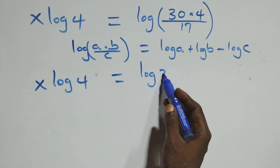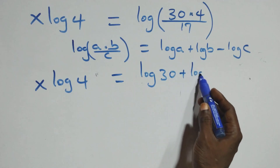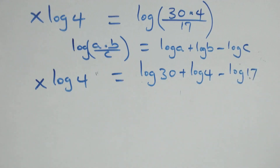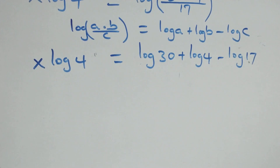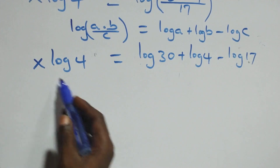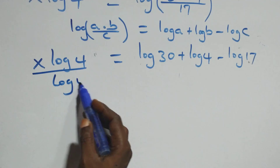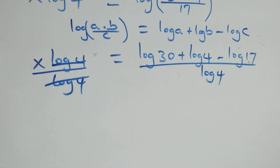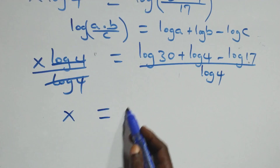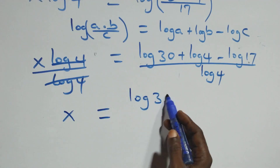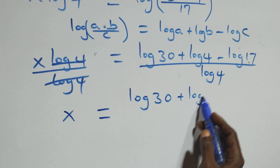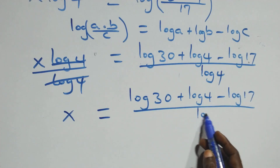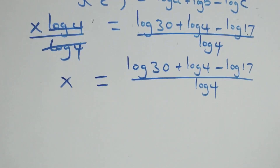So this becomes x·log 4 equals log 30 + log 4 − log 17. The next step is to divide both sides by log 4. The log 4 cancels, leaving x equals (log 30 + log 4 − log 17) over log 4.